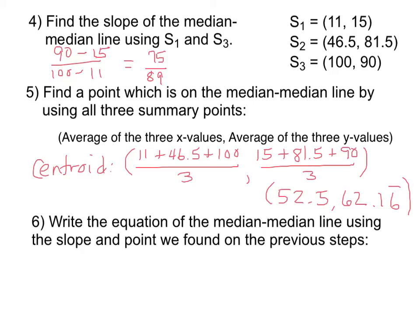Our final step is to actually take the slope we just found and the point and to write the equation of a line. So we use our formula: y minus y₁ is equal to m times x minus x₁.